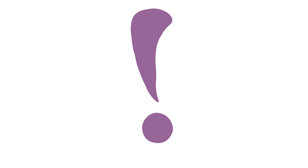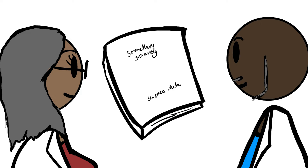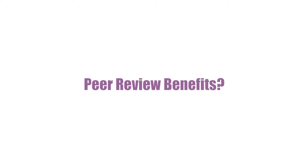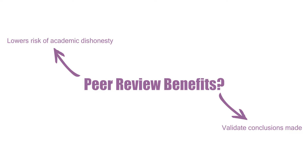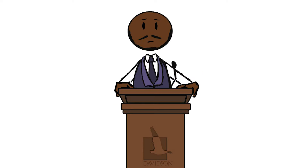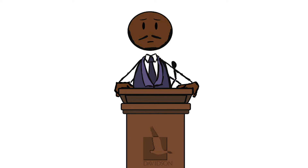Before being published, all work must be peer reviewed, which is a process established to help ensure the integrity of published scientific work, where our paper is sent off to experts in the field — our peers — for quality assessment and assurance. This process is useful for several reasons. It decreases the risk of any dishonesty in data capture and analysis, and also helps to validate conclusions found within the paper. This process is not 100%, however, as mistakes are still made and bad papers are published, but it is a way in which scientists can self-regulate and ensure reliable scientific work is published.